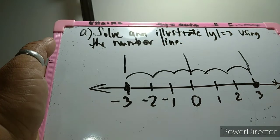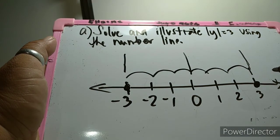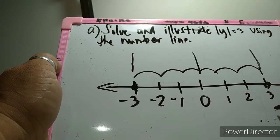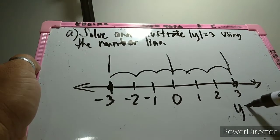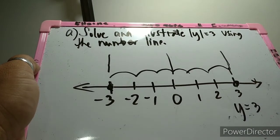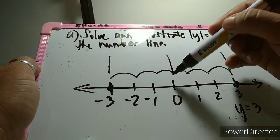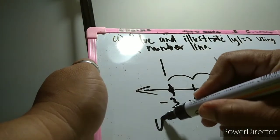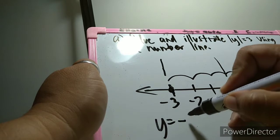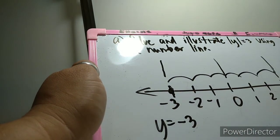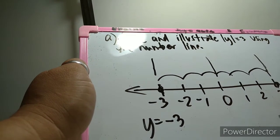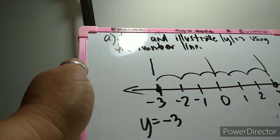So the distance from zero to y equals 3. Going to the right we arrive at positive 3, meaning y equals 3. Going to the left we arrive at negative 3, meaning y also equals negative 3. Therefore, y equals negative 3 and positive 3.